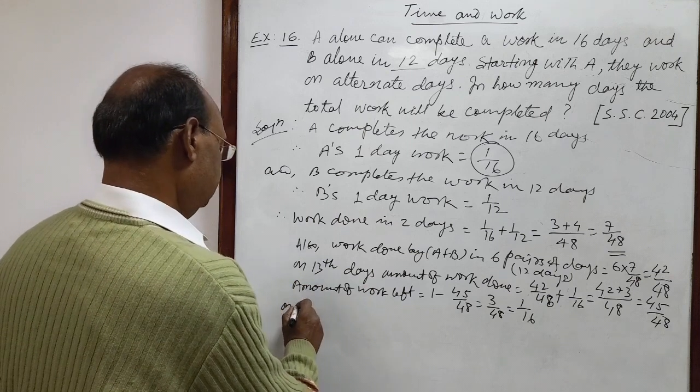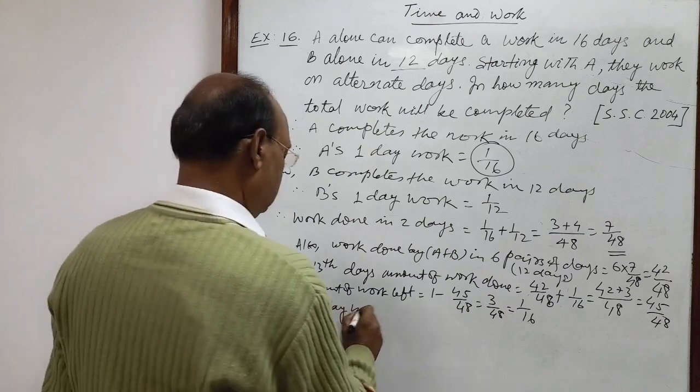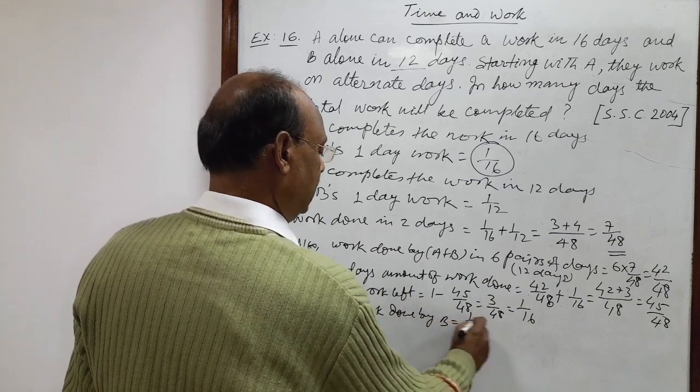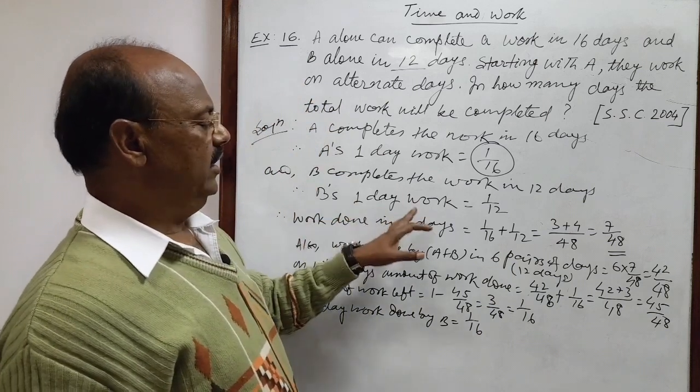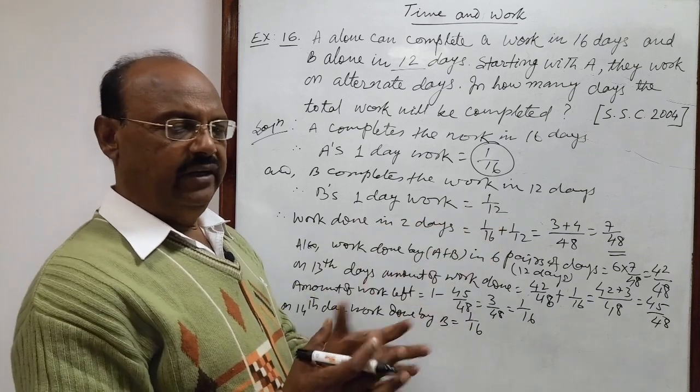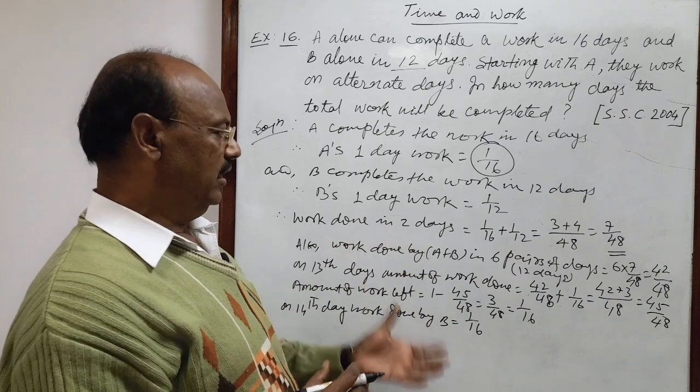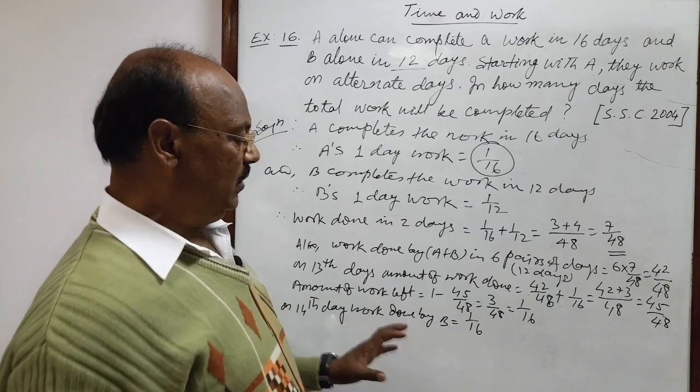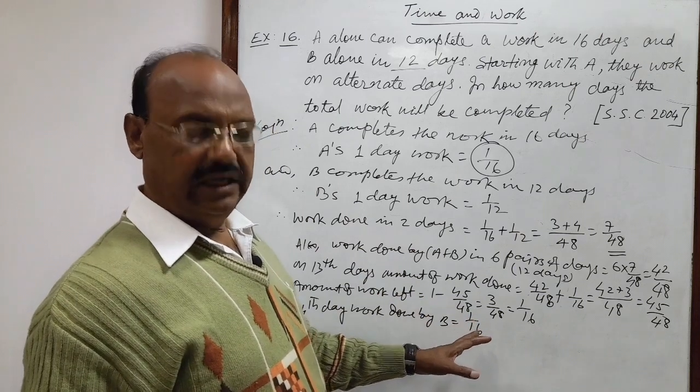On 14th day, work done by B is equal to 1/16. But B's 1 day work is 1/12. 1/12 is greater than 1/16, so 1 entire day will not be required. How much time will be required? We can calculate it. How much time will be taken by B on 14th day for doing 1/16 work? We can calculate here.